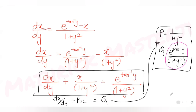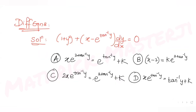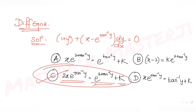So the solution is 2x·e^(tan⁻¹y) = e^(2tan⁻¹y) + k, which matches option C. Therefore, option C is the correct answer.